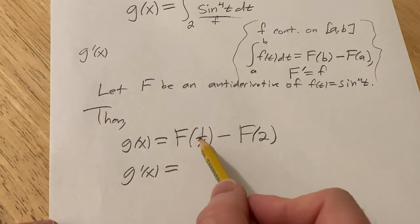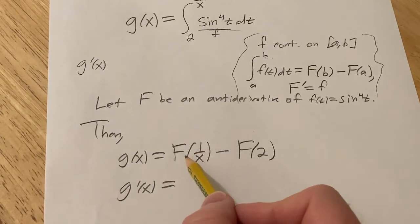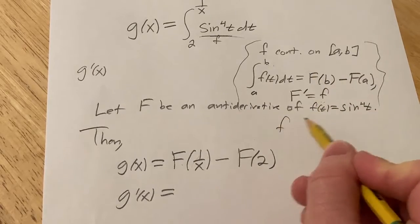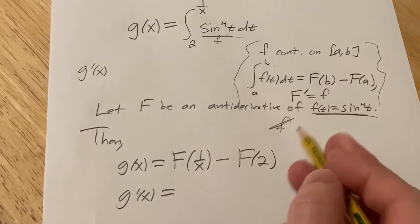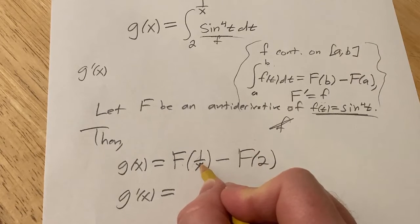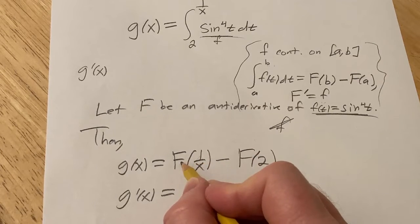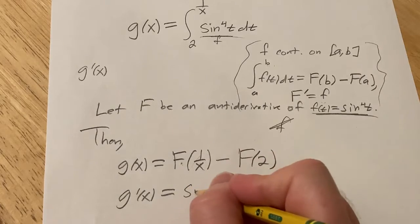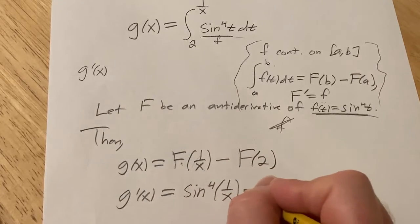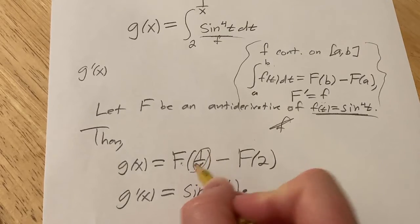So when we differentiate this, basically the derivative of big F is little f, we know that. And then little f in this problem is right here. And because there's an inside function here, we have to use the chain rule. So you take the derivative of the outside, which is big F, and you evaluate it at the inside, that's the chain rule, times the derivative of the inside function.